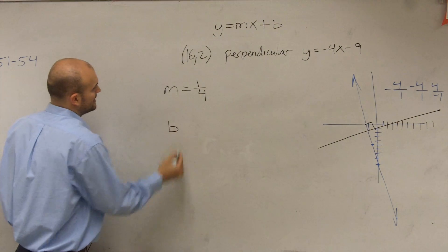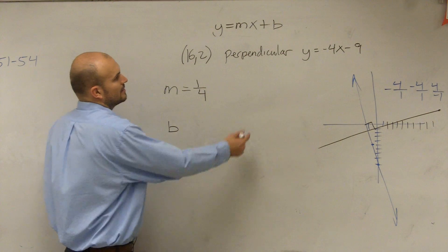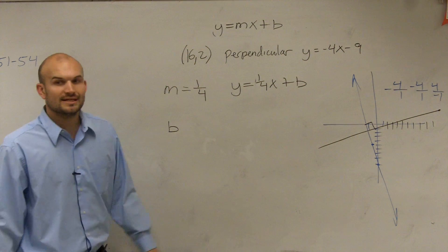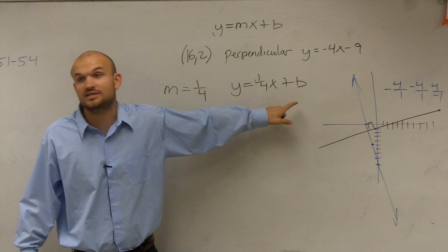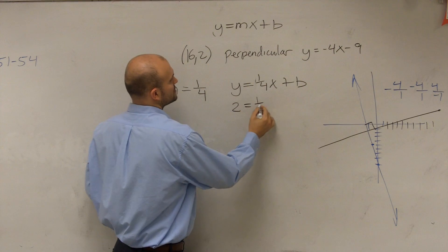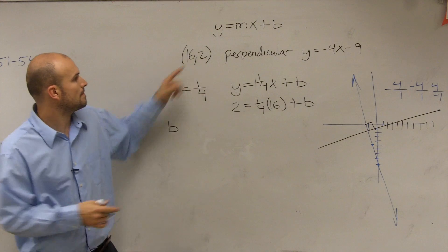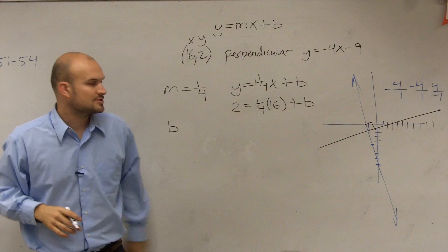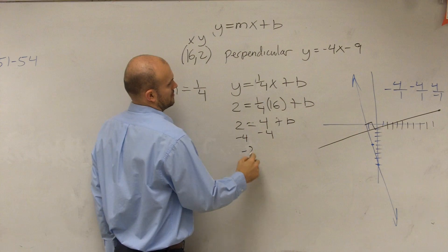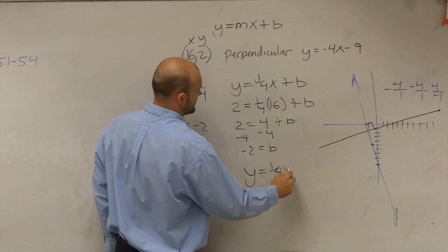Do we know what b is? No, it's not negative 9 — it's different. I need to write it in slope-intercept form and figure out b. Since I'm not given b, I am given a point. So I'll say: 2 equals 1/4 times 16 plus b. What's 1/4 of 16? That's 4. So 2 equals 4 plus b, which means b equals negative 2. So my final equation is y equals 1/4 x minus 2.